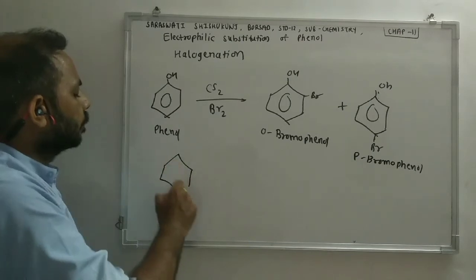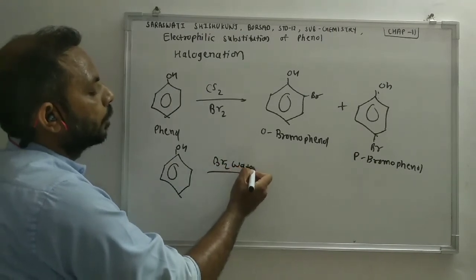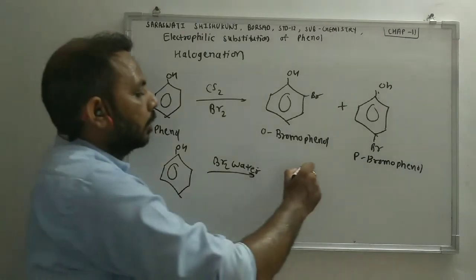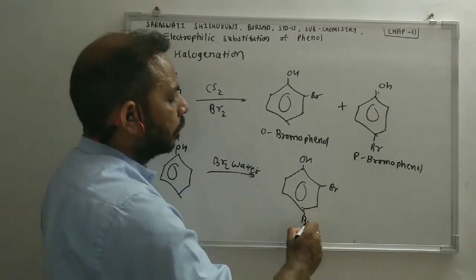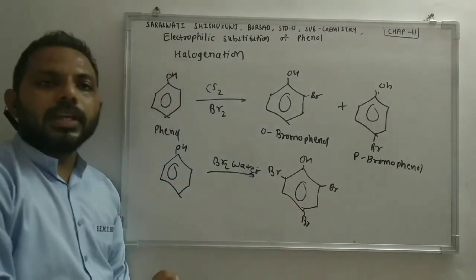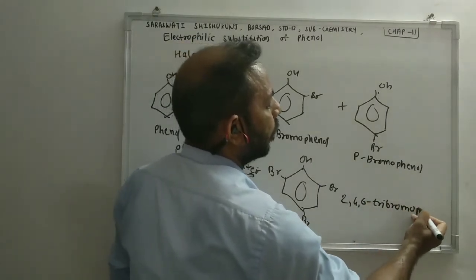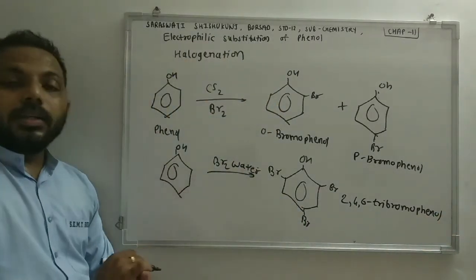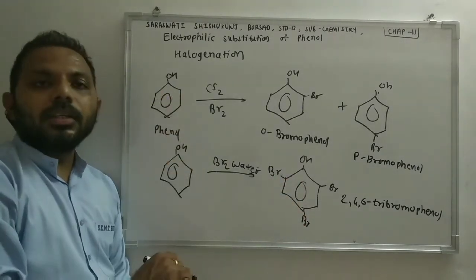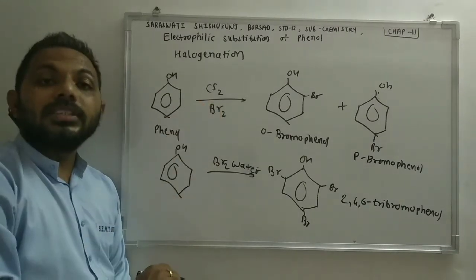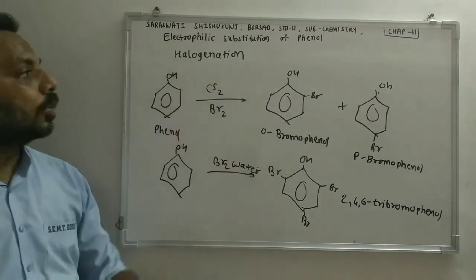If phenol reacts with bromine water, we will get 2,4,6-tribromophenol. To summarize: phenol reacts with bromine water to form 2,4,6-tribromophenol; phenol reacts with bromine in the presence of less polar solvent like CS2 or CHCl3 to form ortho-bromophenol and para-bromophenol. This is electrophilic substitution of phenol.